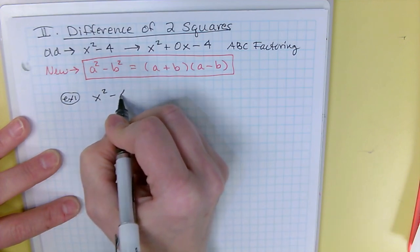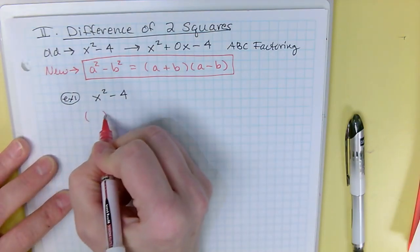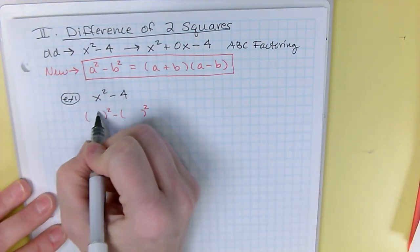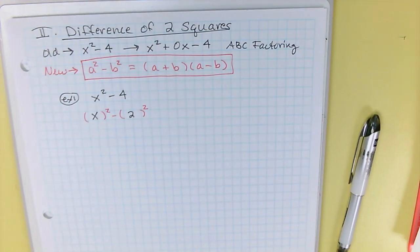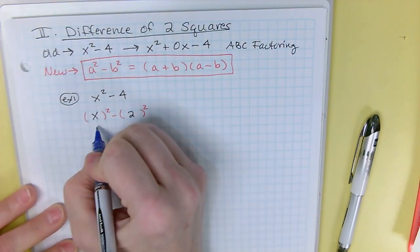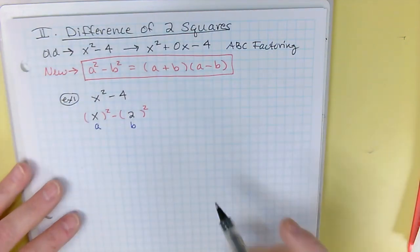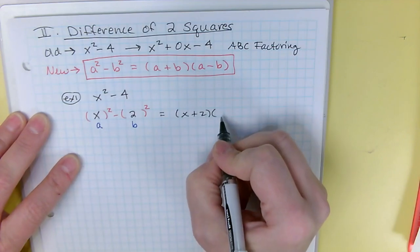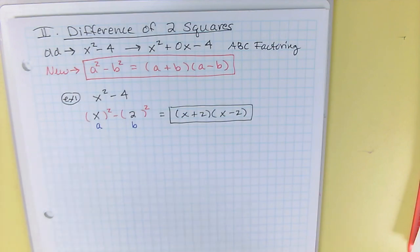Example one: x squared minus 4. To use this pattern, see if you can write it as a perfect square minus a perfect square. X times X is x squared, and 2 times 2 is 4, so that's a 2 squared. That's your green light — you can use the shortcut. A is X, B is 2, and following the pattern: A plus B, A minus B gives (x plus 2)(x minus 2). Very, very fast and easy.